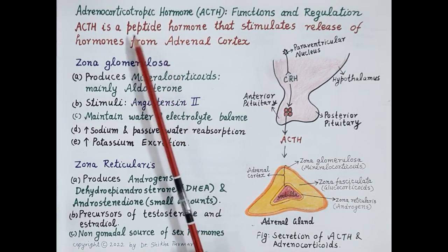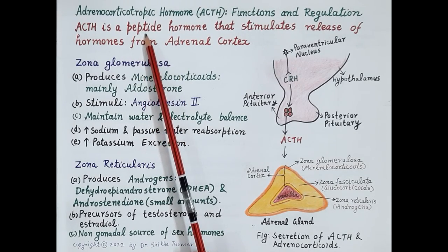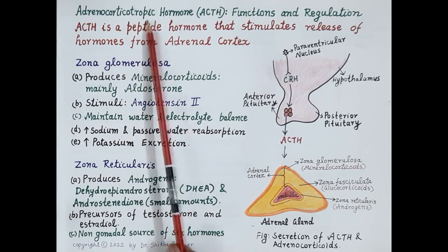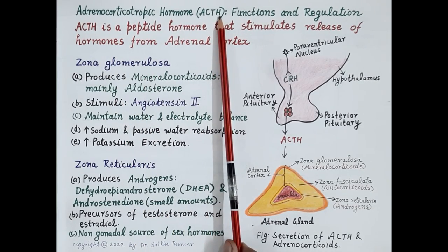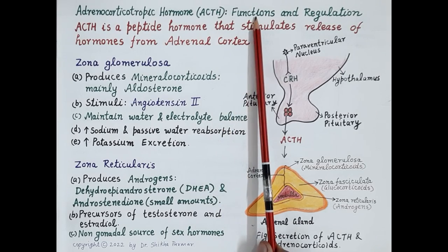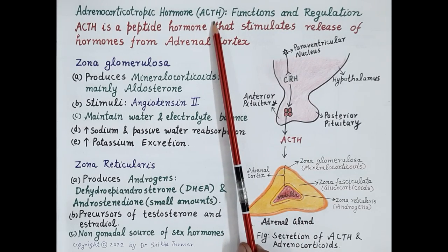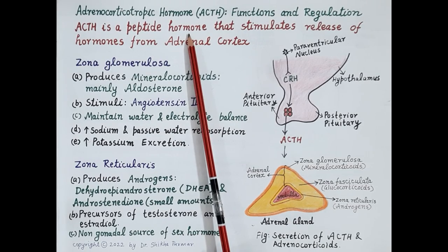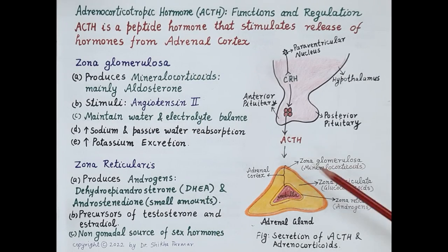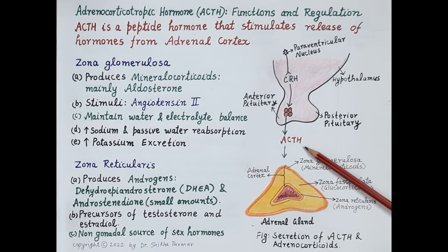Hello students. In today's video we are going to study about adrenocorticotropic hormone, in short ACTH. We will discuss functions and regulation of secretion of ACTH and its disorders, namely Cushing syndrome and Addison's disease. Now ACTH is adrenocorticotropic hormone. It is a peptide hormone, and as the name suggests, it is a tropic hormone that stimulates the release of hormones from the adrenal cortex.